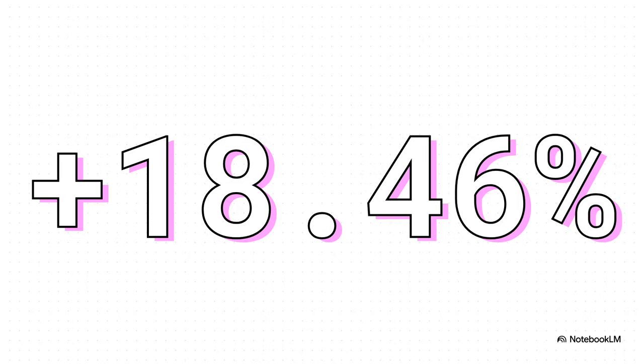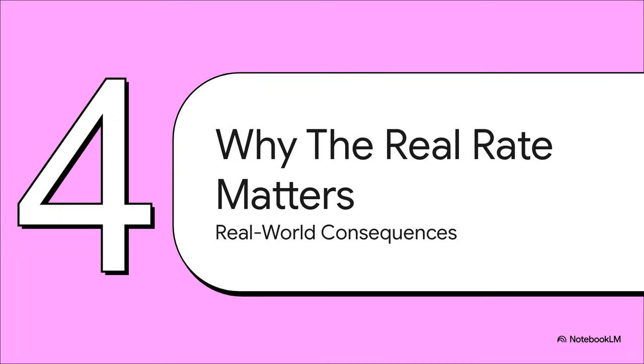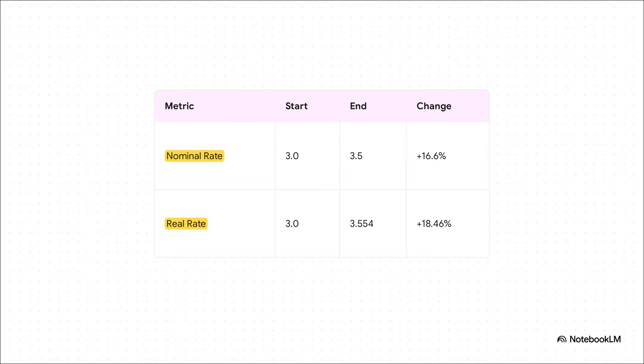The dollar's actual purchasing power got even stronger than it looked on the surface. So why does any of this matter? Why go through all this math? Well, because this isn't just some fun number game. This stuff has huge real-world impacts on businesses, on your wallet, and on entire economies. Just look at them side by side. It's so clear. The nominal rate showed us a strong dollar, for sure. But the real rate? It shows that the dollar's actual ability to buy stuff grew even more. That's a nearly two-point difference that businesses definitely notice.